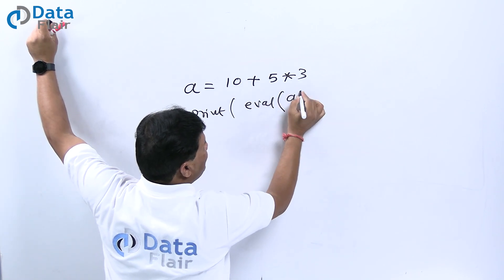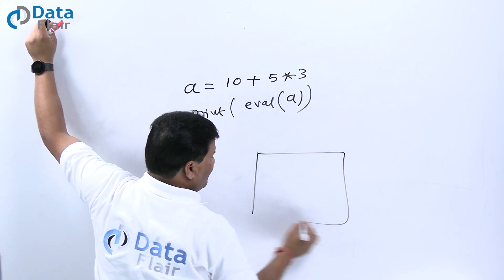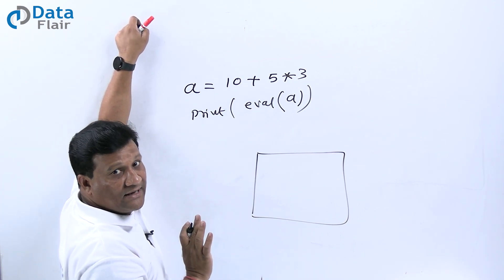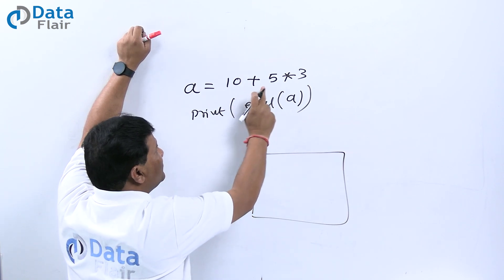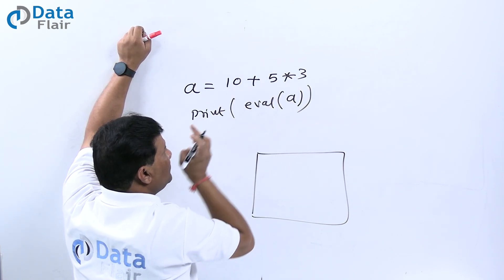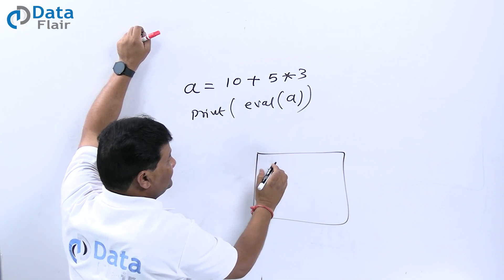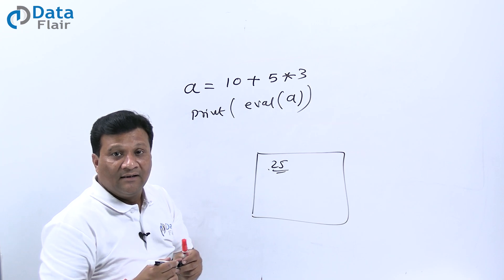When we call eval method, like print eval of a, I'll get the result of evaluation of this expression. The answer will be 5 into 3 is 15, 15 plus 10 is 25, following BODMAS rule where multiplication happens first.